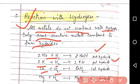Calcium plus hydrogen forms calcium hydride. Magnesium plus hydrogen forms magnesium hydride.